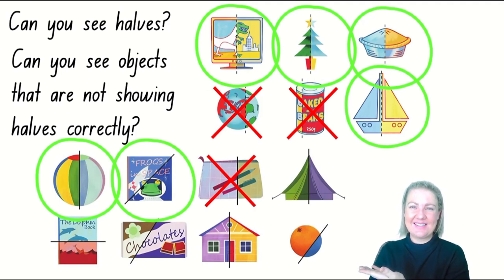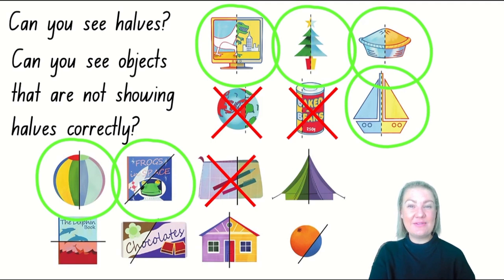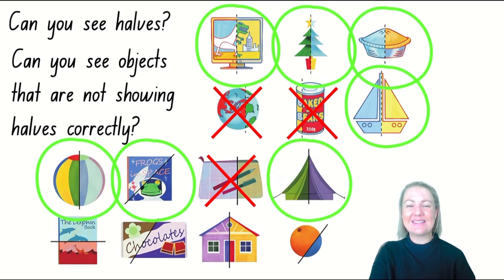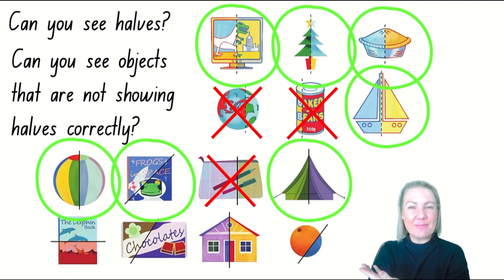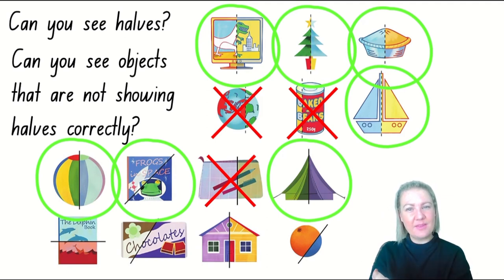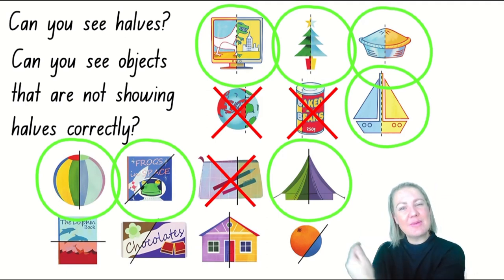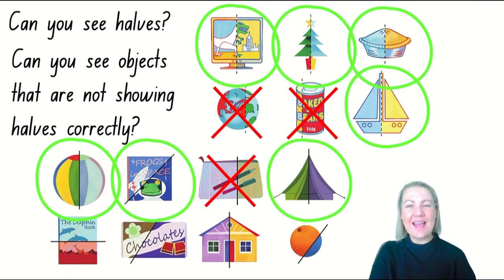How about the tent? Is the line of separation down the middle showing halves? I think it is, so I'm going to put a green ring around that one. We're up to our last four items, kindergarten. What do you think about this dolphin book? The line of separation is not running vertically this time — it's horizontal, going across the middle. But are both pieces the same? Has the book been split to show halves? I think it has, so I'm going to put a green circle around that picture.